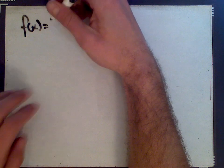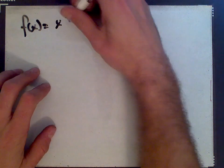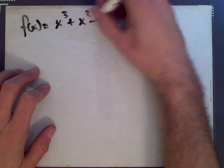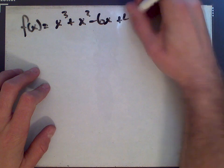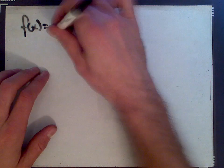This problem has to do with asymptotes. So we're given a function f of x equal to x cubed plus x squared minus 6x plus 4 over x squared minus 1.